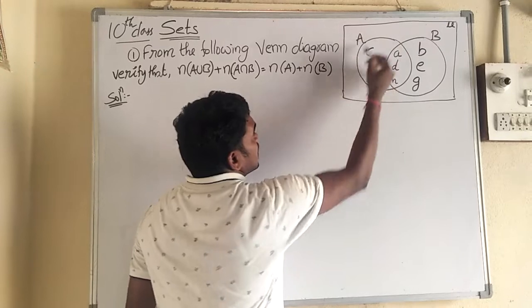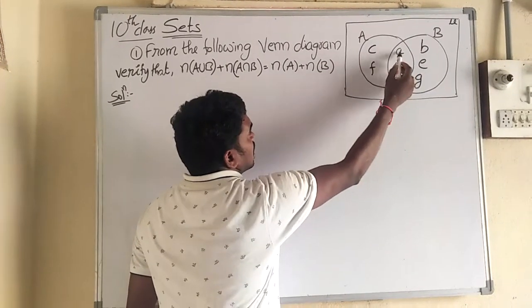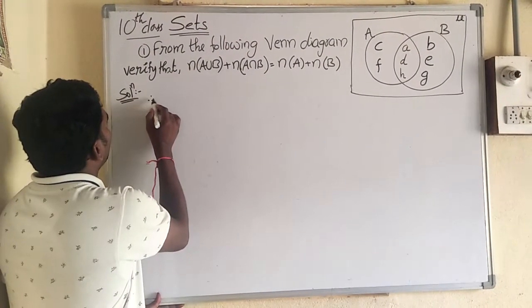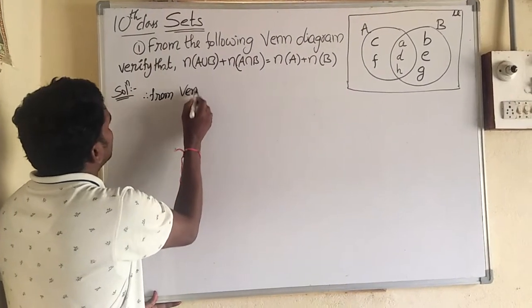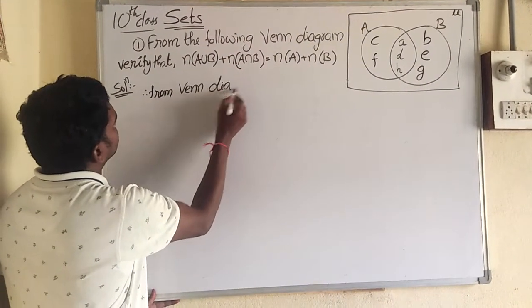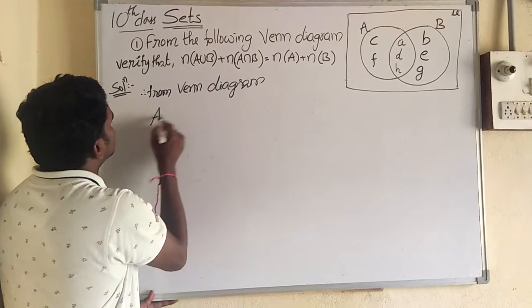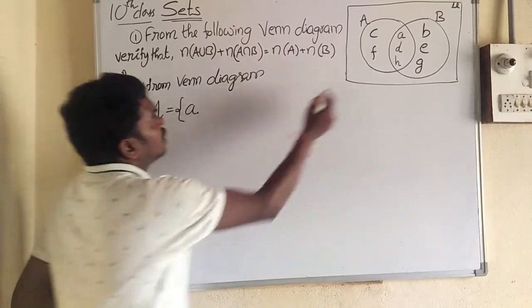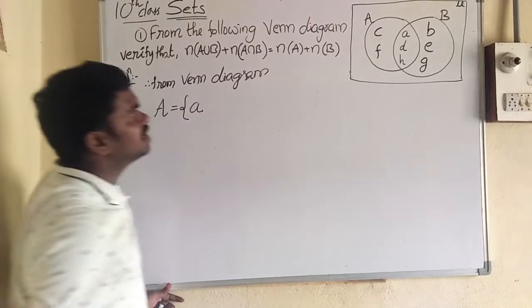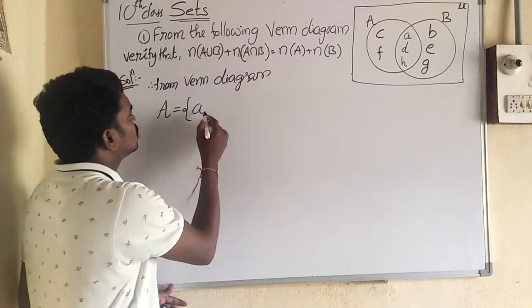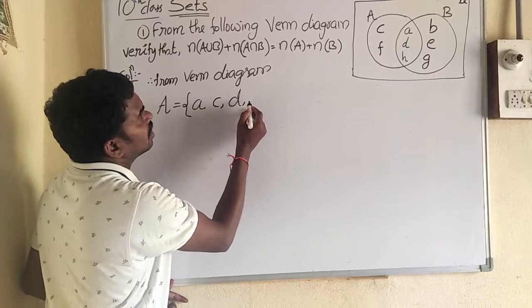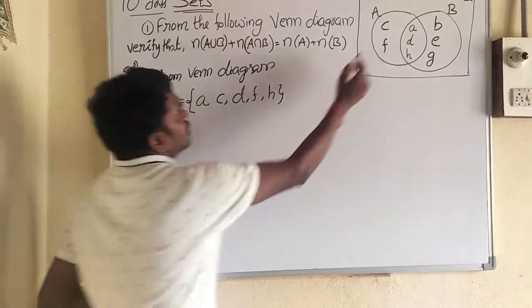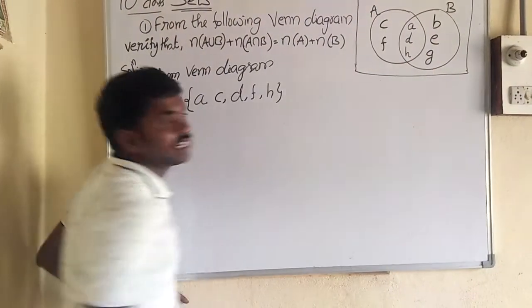Set A — what are the elements of set A? From the Venn diagram, set A equals {A, C, D, F, H}. These five are the elements of set A.